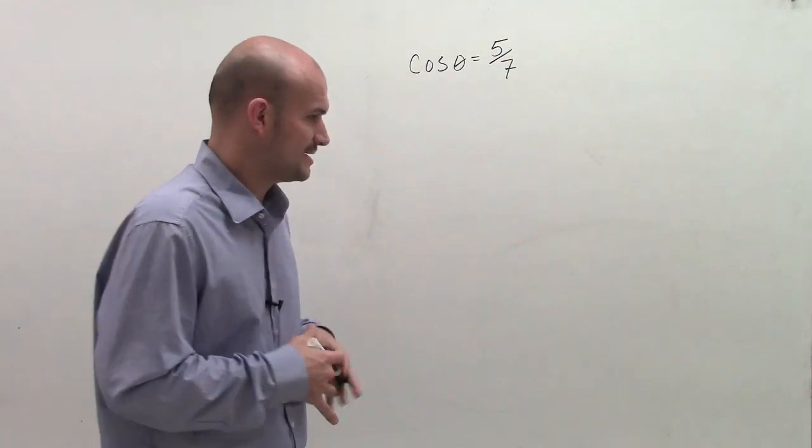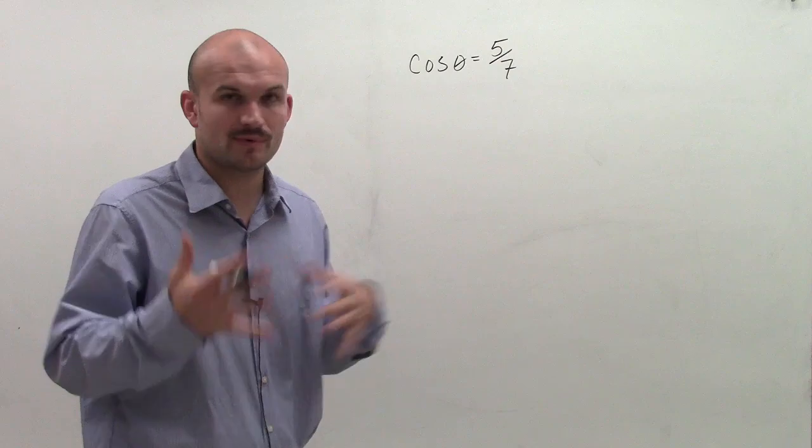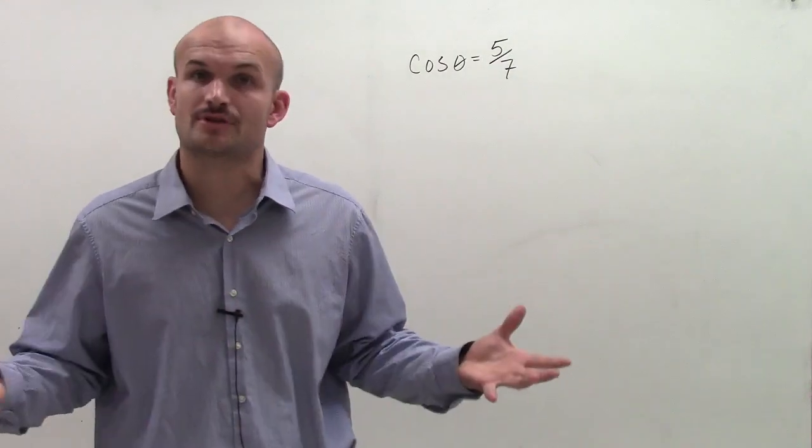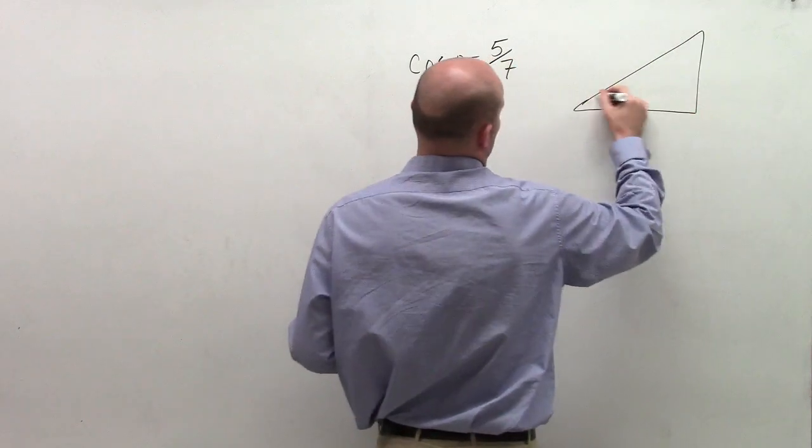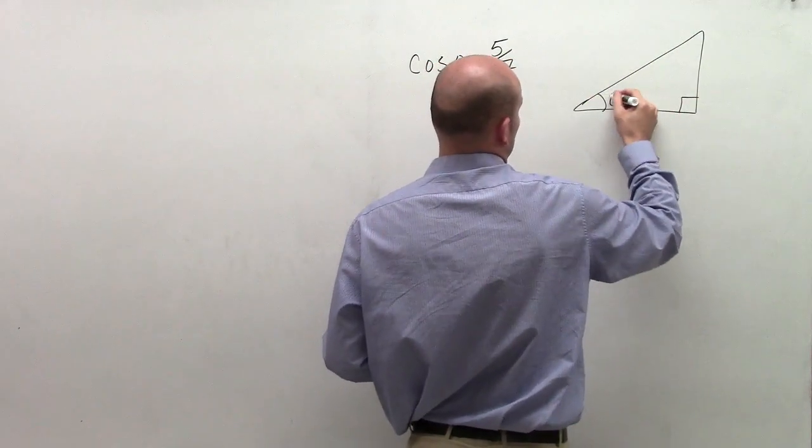So when given a problem like this, the main important thing is we need to figure out, when we're trying to figure out all six trigonometric functions, we need to make sure that we draw a triangle and then also that we have all sides of the triangle figured out.